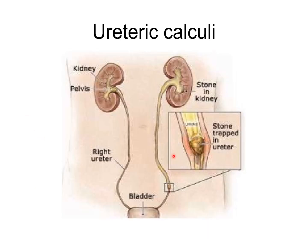Ureteric calculi are stones that form in or travel down to the ureters. If the lumen of the ureter is blocked by a calculus, it produces severe pain known as ureteric colic. This pain is referred to all the cutaneous regions innervated by the same spinal segments as the ureter. The pain of ureteric colic begins from the loin and shoots downwards and forwards to the groin and then into the scrotum or labium majus.